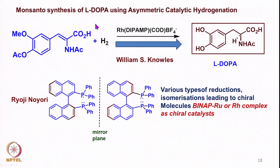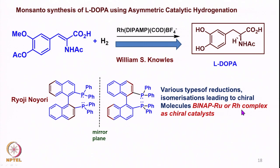We also looked at the Monsanto synthesis of L-DOPA using asymmetric catalytic hydrogenation, initially developed by William Knowles to form L-DOPA on an industrial scale. He used a rhodium catalyst, and then Noyori modified the ligand to BINAP-based chiral ligands, making use of various kinds of BINAP-ruthenium or BINAP-rhodium complexes as chiral catalysts, allowing these reactions to take place in a highly enantioselective fashion.